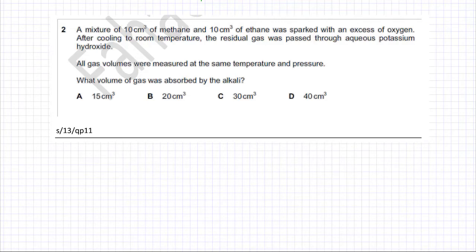The following question is about the combustion of methane and ethane. The question states that there is a mixture of 10 cm³ methane and 10 cm³ ethane that was sparked with an excess of oxygen. This means complete combustion is taking place.